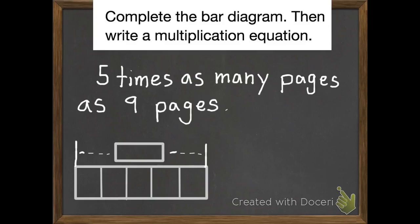So I see there are five bars or boxes. And my question says five times as many pages as nine pages. So each of those five bars is going to have a nine in it. Then I need to solve it. So five times nine is 45 and 45 pages.